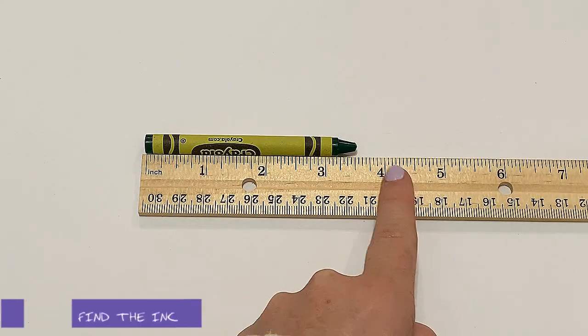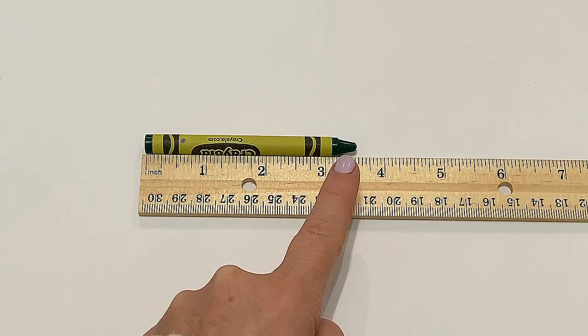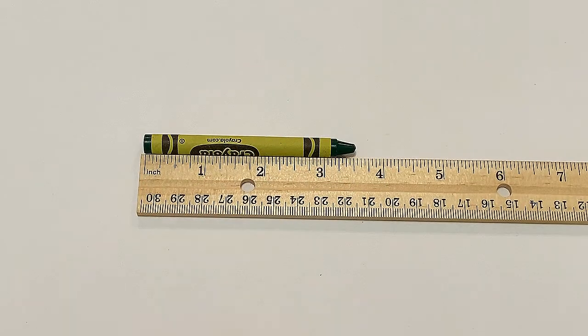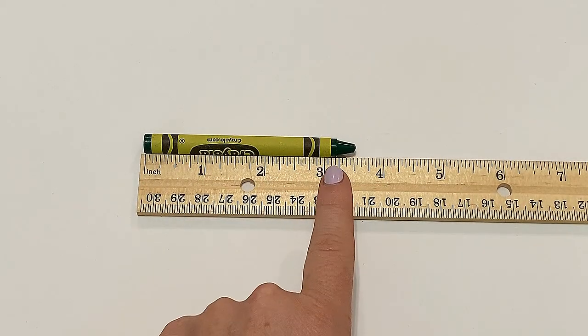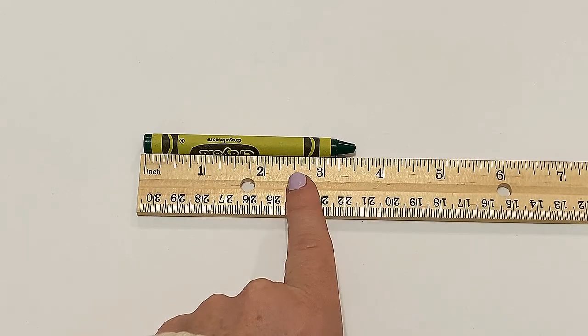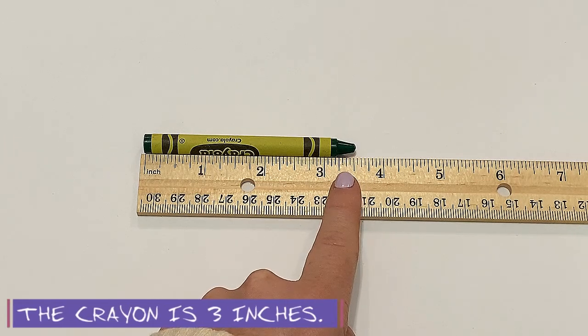It's not quite four inches but it's past the three inches. It's about halfway there so I need to make a decision about what's the nearest inch. Remember nearest means closest. So I'm going to use my eyes because my eyes are a mathematician tool as well and I'm going to make the assumption that this crayon is about three inches long.